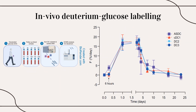Strikingly, ASDCs appeared in the circulation as early as 6 hours post-labeling, suggesting a very short post-mitotic dwell time in the bone marrow prior to entering the circulation. These ASDCs then followed a similar kinetic trajectory to the other CDC subsets, which appeared one day post-deuterium pulse.